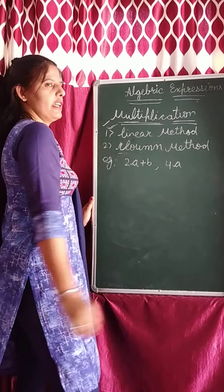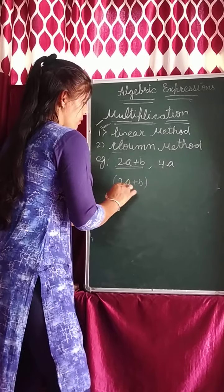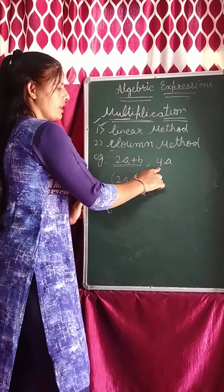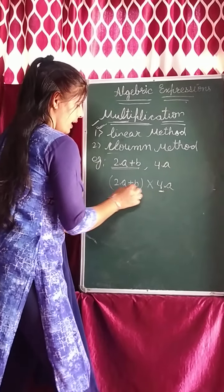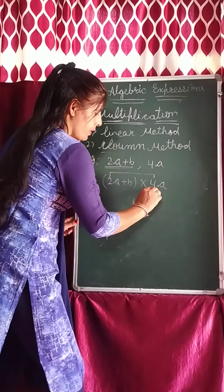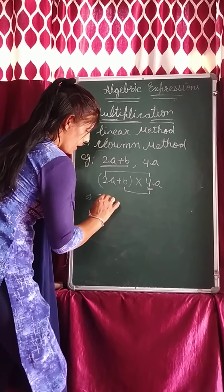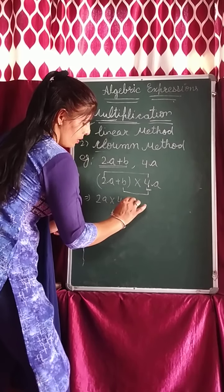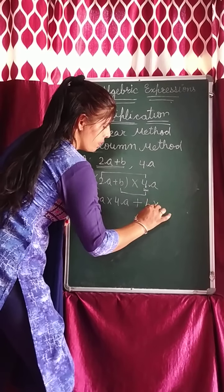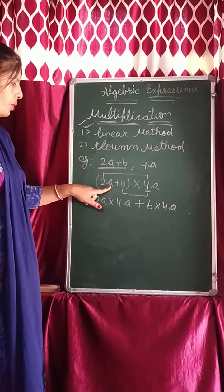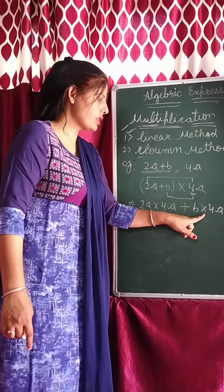So what is the first method? Linear method — with the linear method, how do you solve this? Keep the first statement as it is: 2A plus B, then put the multiply sign, and multiply with 4A. Now how to solve this — take this 4, and first multiply it with 2A (constant with constant), and then with B. Then plus sign, and then multiply with B. So: 2A multiplied with 4A, then plus sign, then B multiplied with 4A.